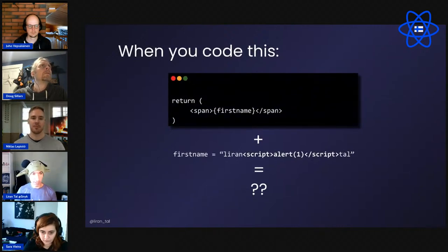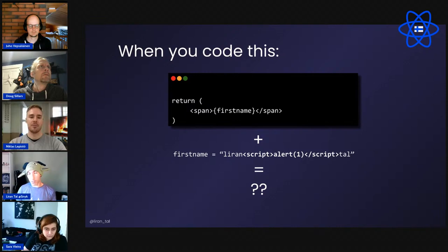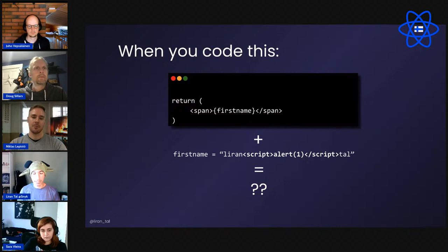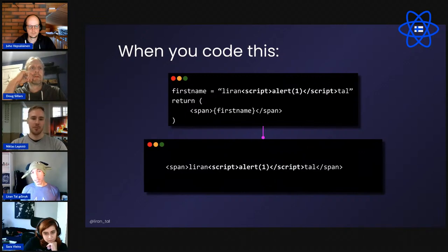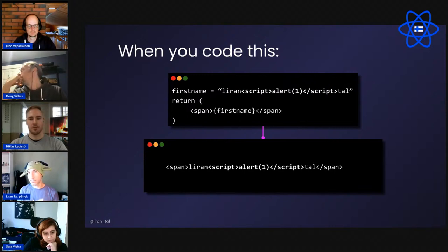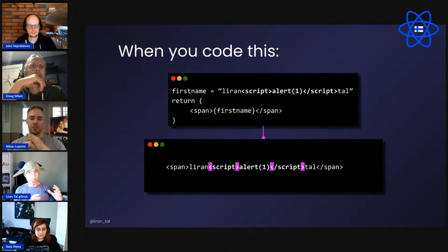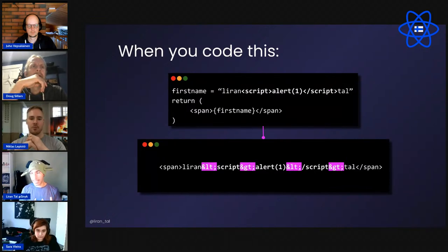If you have a variable like firstName that gets returned in a span, that variable can come from anywhere. Someone could try injecting JavaScript — like a script alert — into it. What happens? If you render that with React, you'll see it outputs the script tag as plain text. What React is doing behind the scenes is converting potentially dangerous input — those angle brackets — into HTML entities, so the browser displays them rather than evaluating them as code.